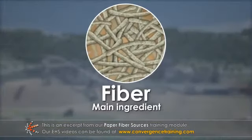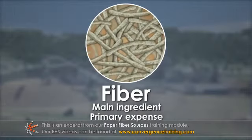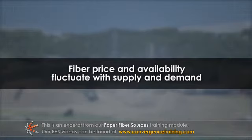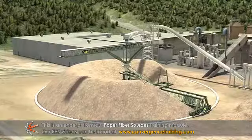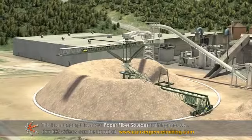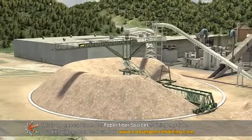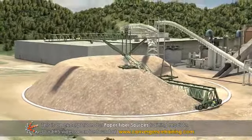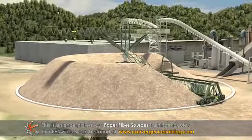Fiber is the main ingredient and primary expense in the manufacture of paper and board products. Both its price and availability fluctuate with supply and demand. To be successful, mills must be able to economically source fiber in an increasingly competitive marketplace.